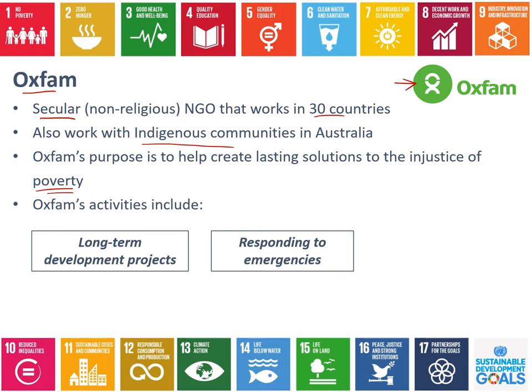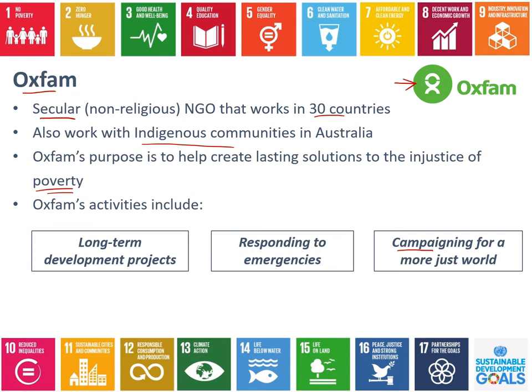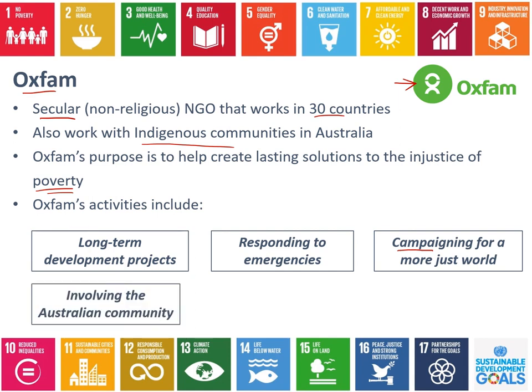Some of Oxfam's activities include long-term development projects in health, education, and income. They also have an emergency or humanitarian section as needed. They do a lot of campaigning — if more and more people are aware of injustices, people are more likely to either support financially or take a real interest in politics around injustice, which might impact how they vote. Oxfam has a really big role in involving the Australian community through awareness, education, and advocacy, highlighting injustices that people in Australia don't necessarily see.